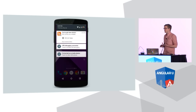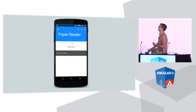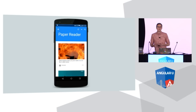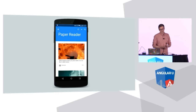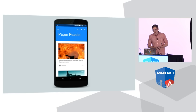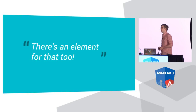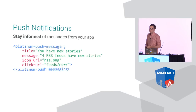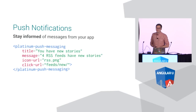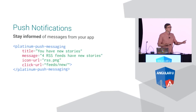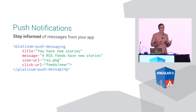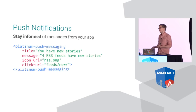Another thing you may want to add are notifications — a user gets a native notification, they can click on it and jump back and reengage with your application. This is another thing that is enabled by Service Worker, and there is an element for that too. Using the Platinum push messaging element, with basically a little bit of HTML, you can instantly add push messaging support to your application.